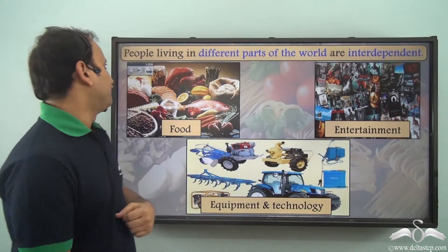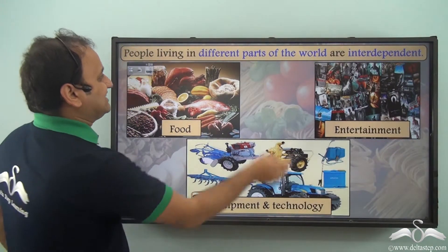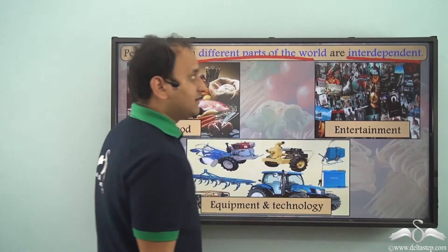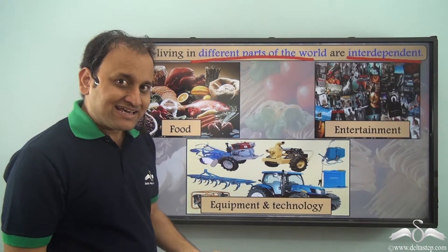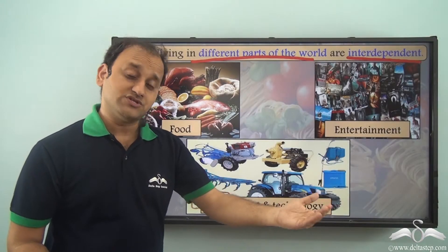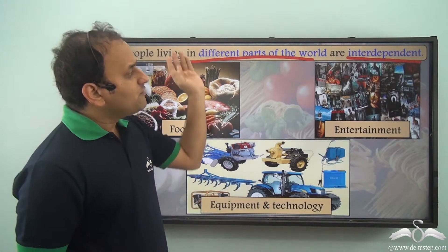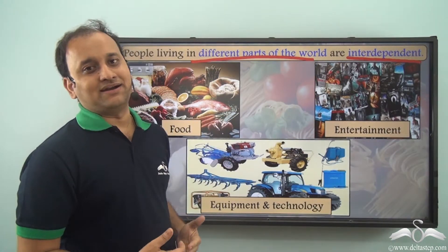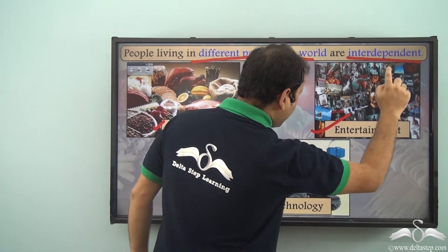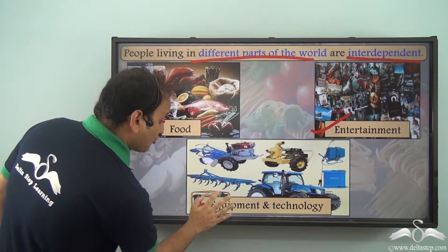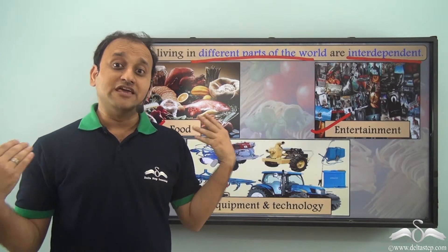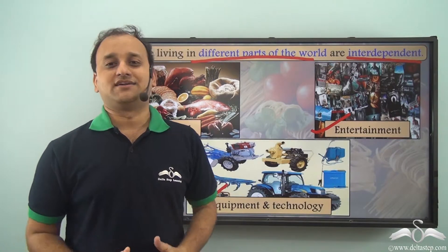So what do we see? People living in different parts of the world are interdependent. All our needs are so interdependent — some things others produce, we use, and we are all interdependent. Whether it is food, entertainment, equipment or technology, for everything we all are interdependent.